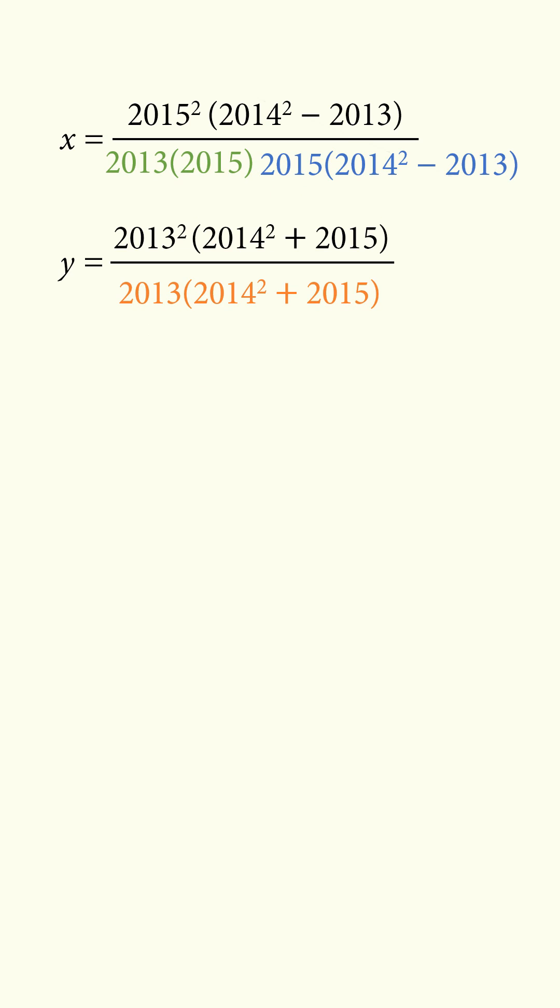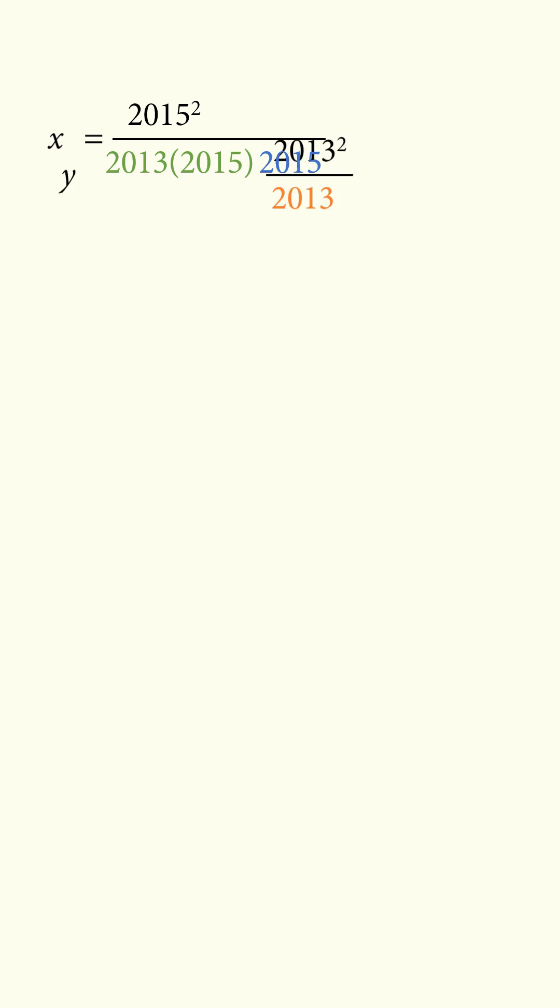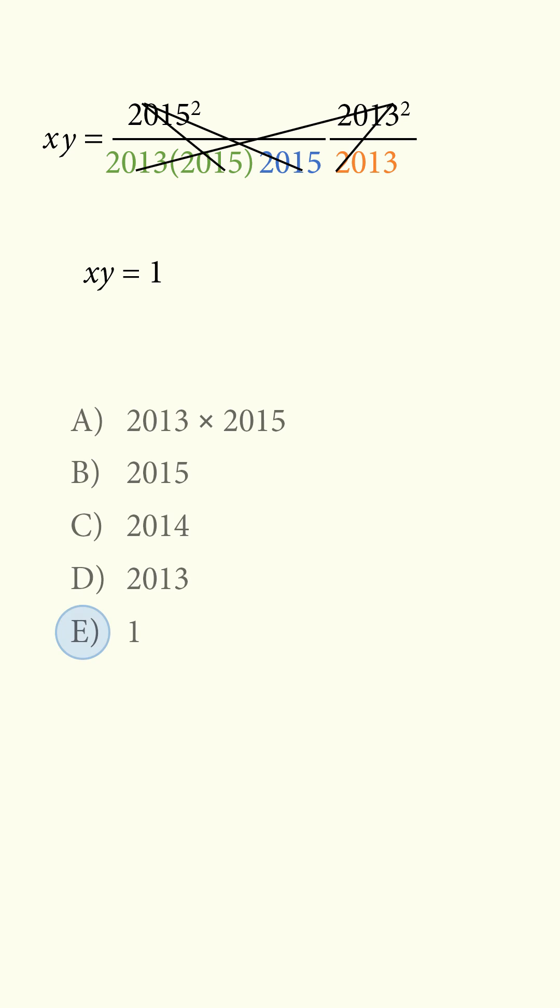We substitute these in, and then we can simplify the fractions. We can further simplify the product of x and y, and everything will magically cancel out, so the product is equal to 1, which is answer choice E.